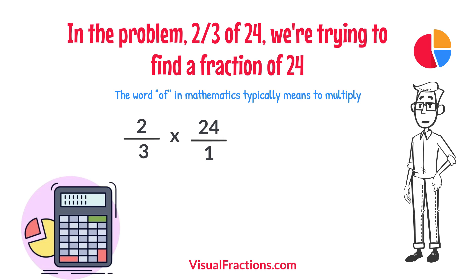Now, we proceed to multiply across. First, multiply the numerators, 2 times 24 equals 48.